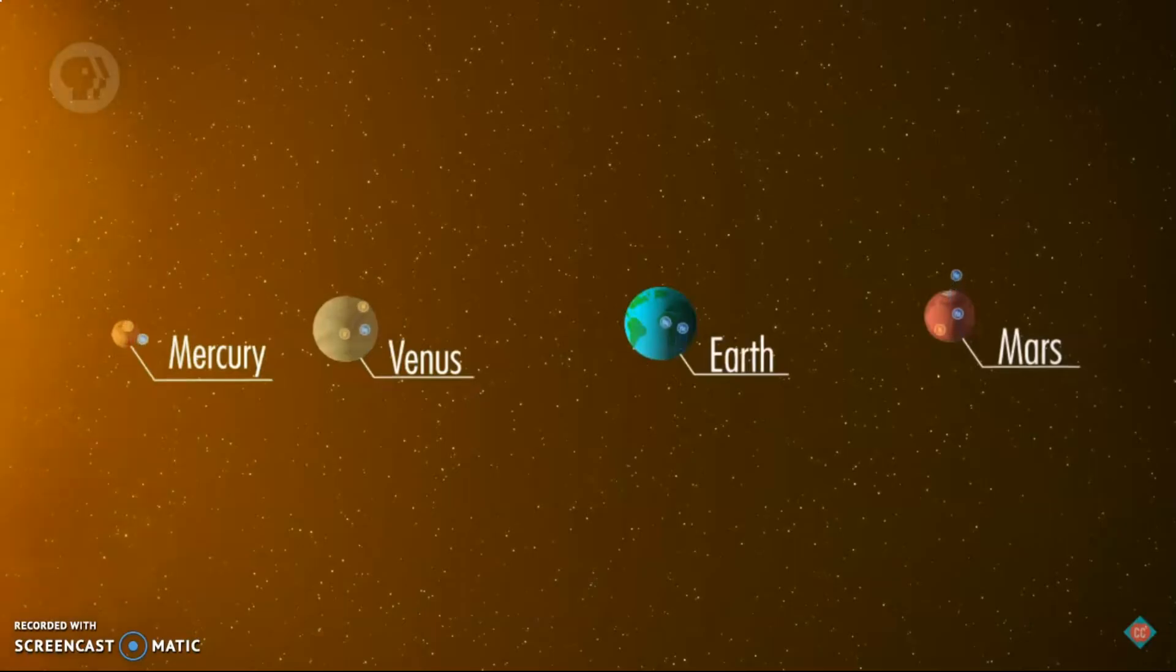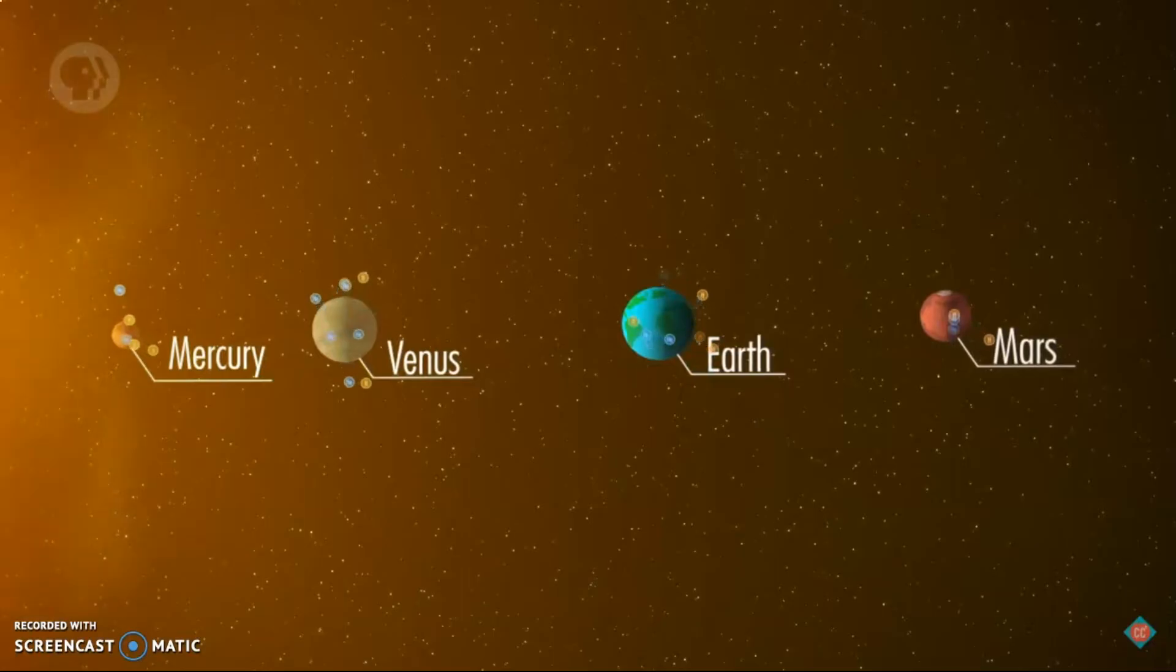The four planets closest to the Sun, called Mercury, Venus, Earth, and Mars, are called terrestrial planets. Terrestrial, meaning rock, describes the landscape of these four planets.